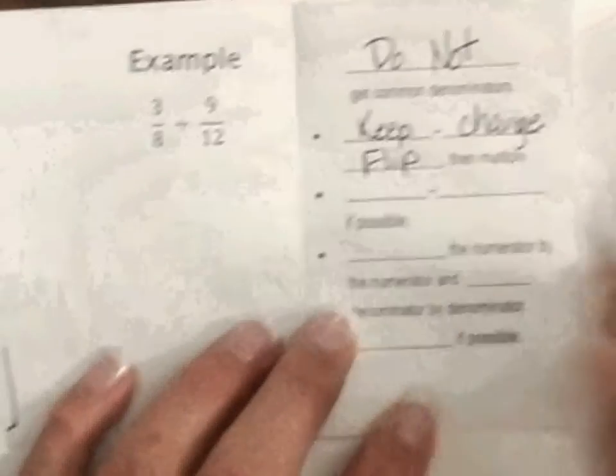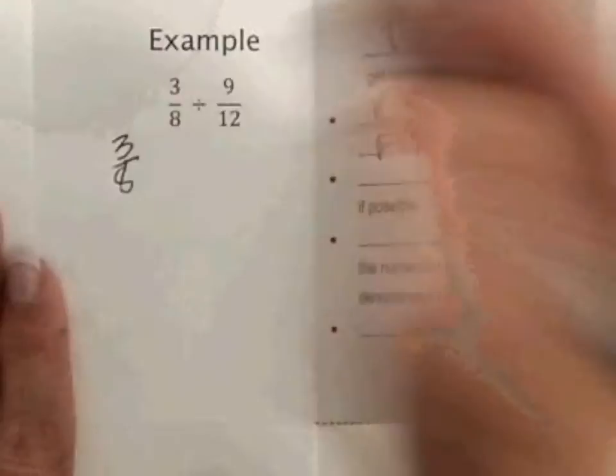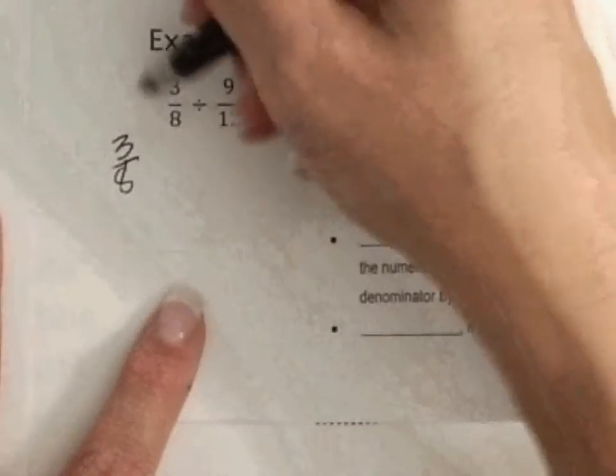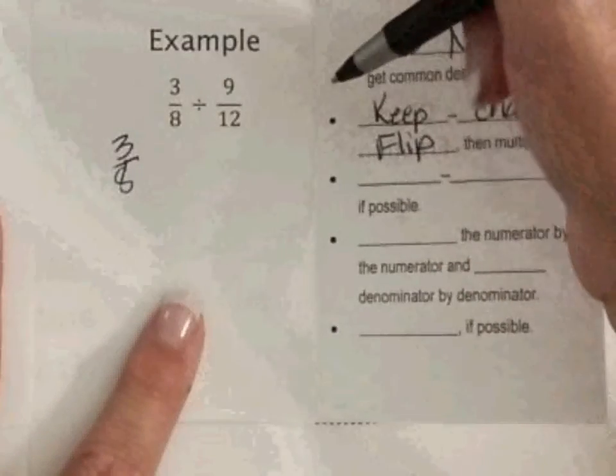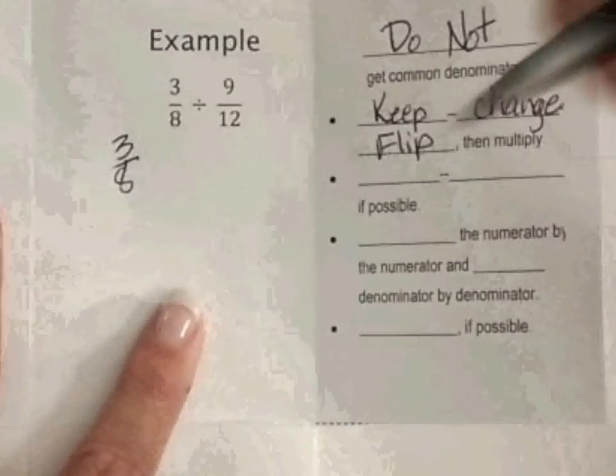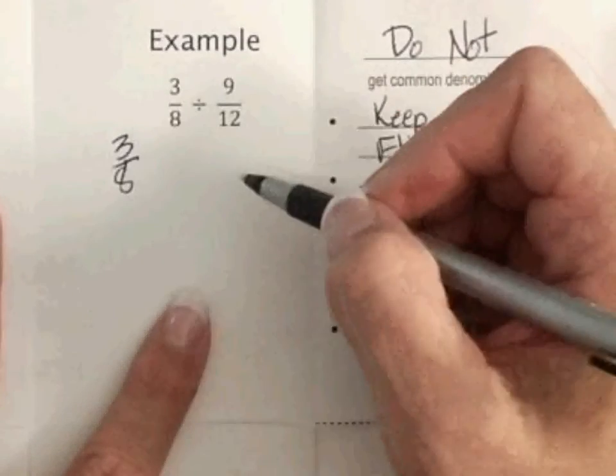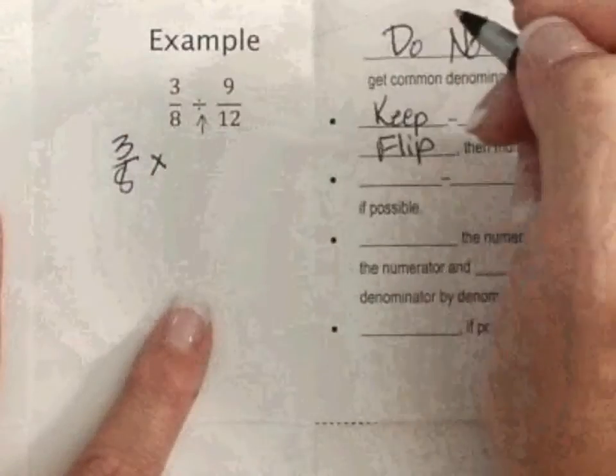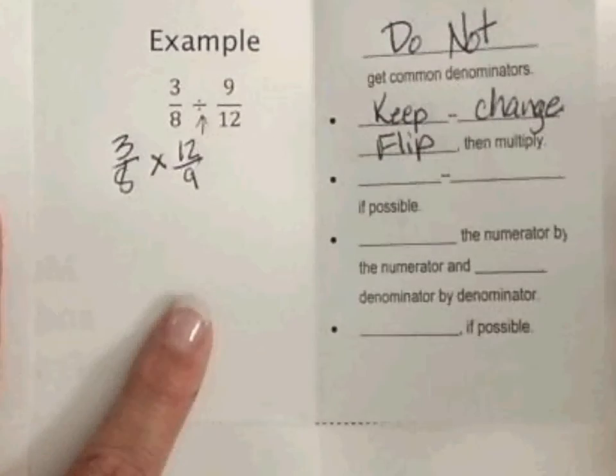So, what that means is you keep your first fraction the same. And I'm going to rewrite the whole thing. Please, take the time to rewrite your whole problem. I see a lot of students who try to do all these little notations up here and without writing it over. Trust me, it will save you time in the long run to go ahead and write it over and not get yourself confused. So, I'm going to keep my first fraction the same. I'm going to change this division to multiplying. And I'm going to flip my second fraction.